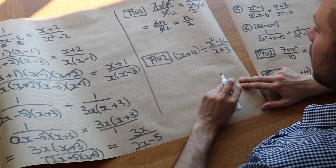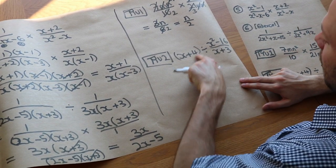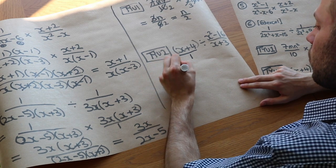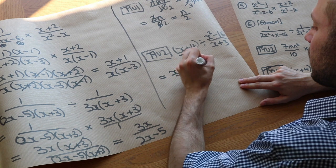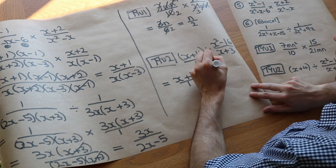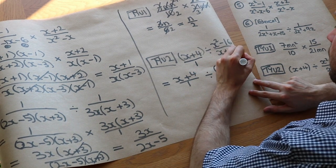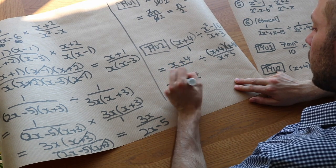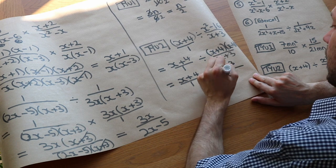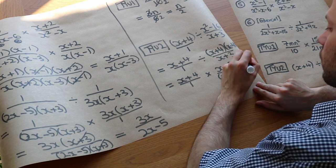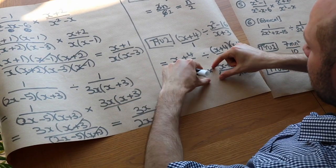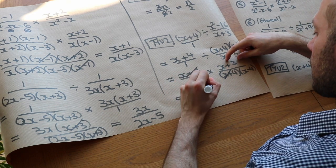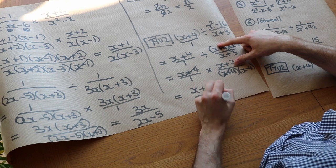Test question 2: (x+4) divided by (x squared minus 16) over (x+3). The second part is not a fraction, so we write x plus 4 over 1. Factorise x squared minus 16 as (x+4)(x-4). Then flip the second fraction and multiply: (x+4) over 1 times (x+3) over (x+4)(x-4). The (x+4) terms cancel, leaving (x+3) over (x-4), which is the final answer.